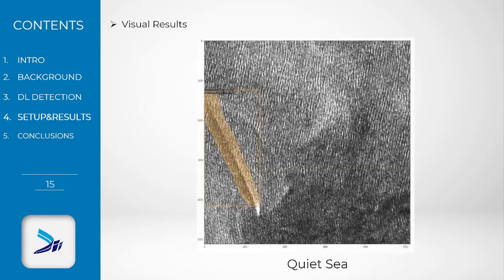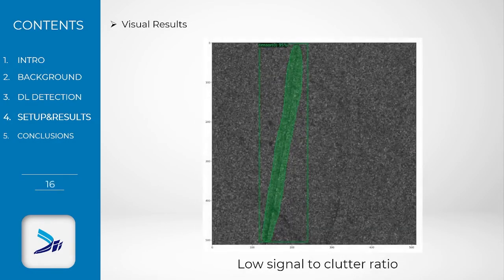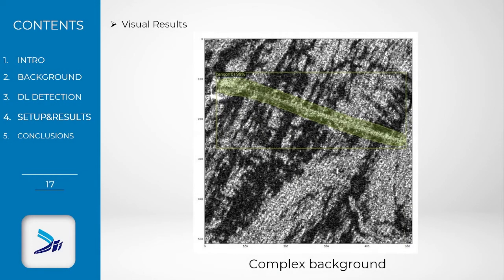Finally, we show some visual results achieved by Cascade Mask-RCNN in a quiet sea condition, in a low signal-to-clutter ratio condition, and in a complex background condition.